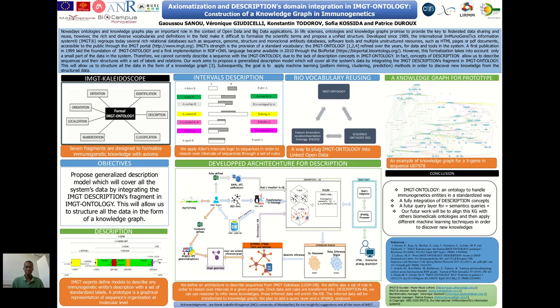My theme is the axiomatization and description domain integration in IMGT ontologies. IMGT ontologies is founded on seven domains or fragments that allow to formalize immunogenetic knowledge. These domains permit to give terms and relations — for example, to identify, describe, classify and localize an immunogenetic entity. The actual state of IMGT ontology implementation does not permit to make a description of an immunogenetic entity.